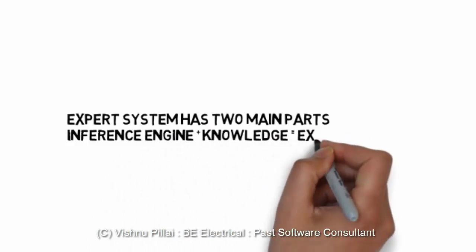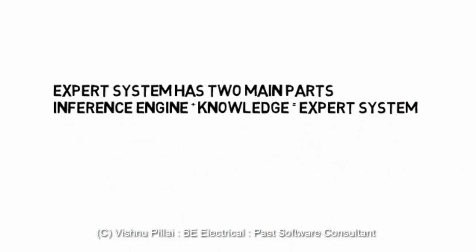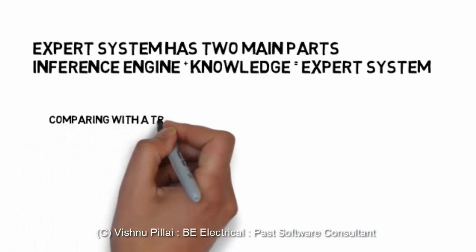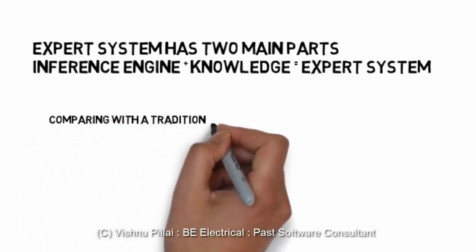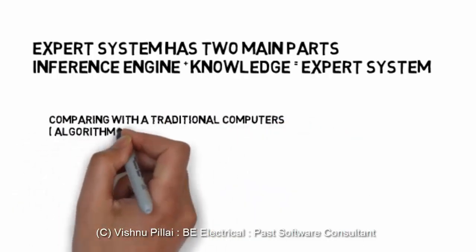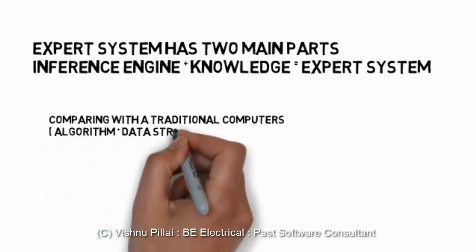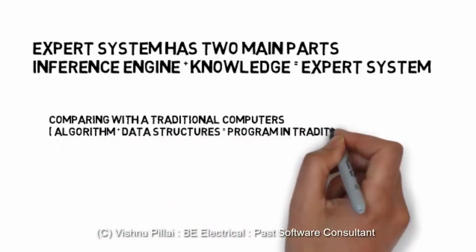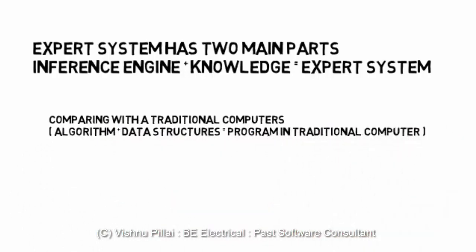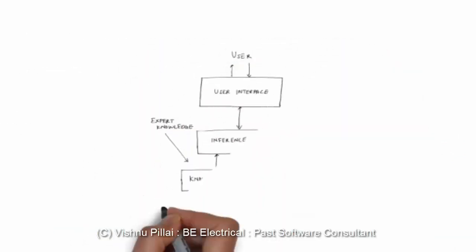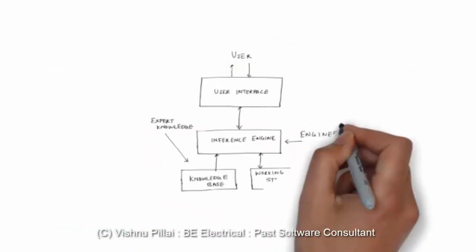The expert system has two main parts: the inference engine and the knowledge base. Inference engine plus knowledge base constitutes a standard expert system. Comparing with traditional computers, you can think of the inference engine as the algorithm and the knowledge base as the database.